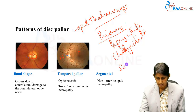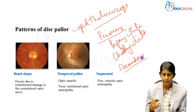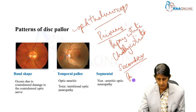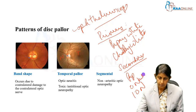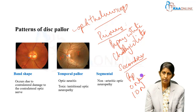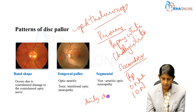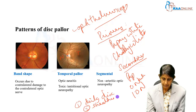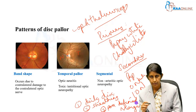Secondary optic atrophy can follow pre-existing disease in the eye, such as papilledema, ischemic optic neuropathy, or optic neuritis. Patients with secondary optic atrophy will have a dirty or grayish-colored disc. They can also have sheathing of vessels in the peripapillary area and poorly defined margins on the optic disc. These are the salient features of secondary optic atrophy.